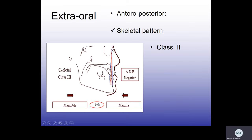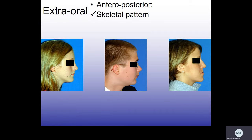Class III is when A point is less than 2 mm ahead of B point, and sometimes they are flush, or B point is actually ahead of A point. In the anterior-posterior dimension, we look at A point and B point — this is Class I, this is obviously Class II, and this is Class III. In the skeletal pattern AP section of the form, you write this information first.